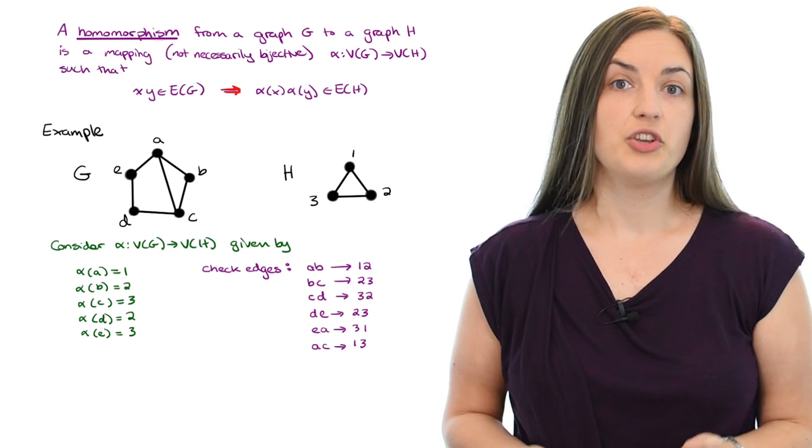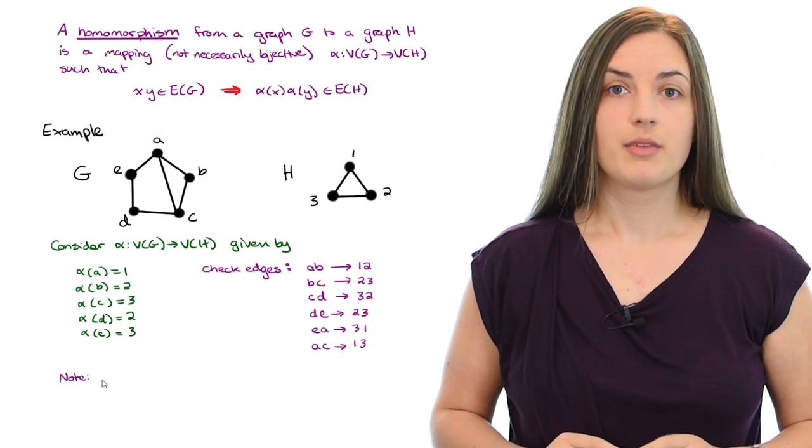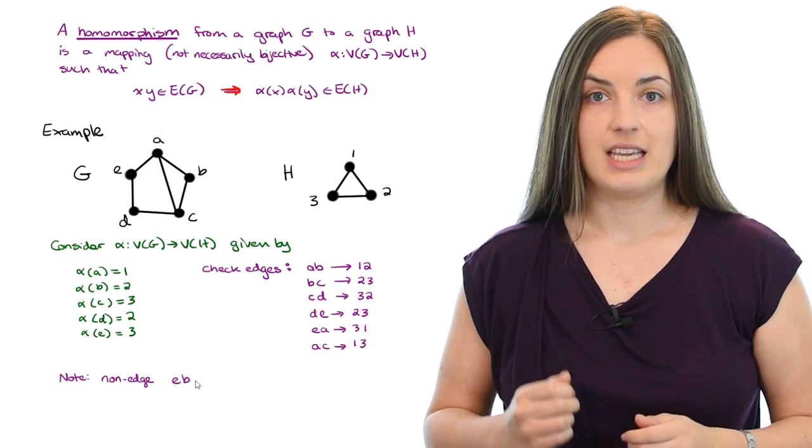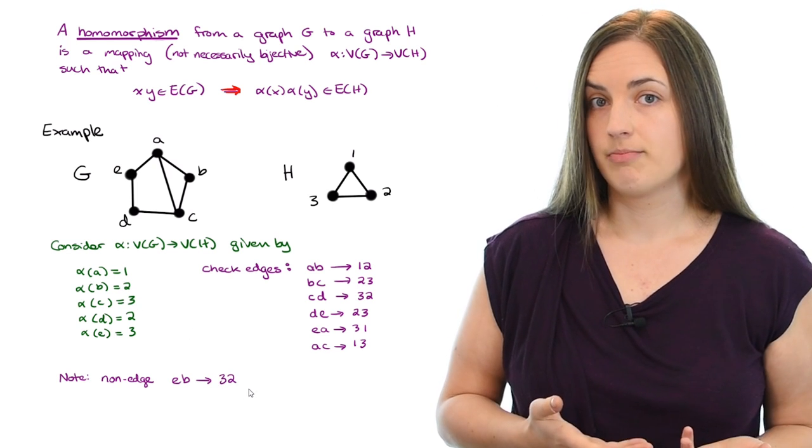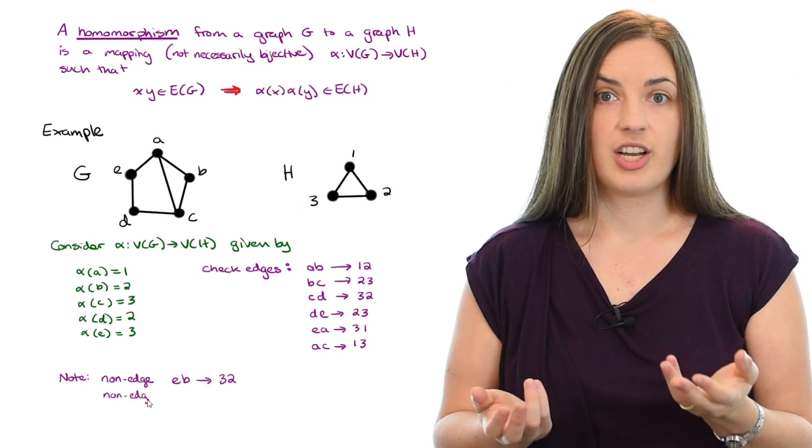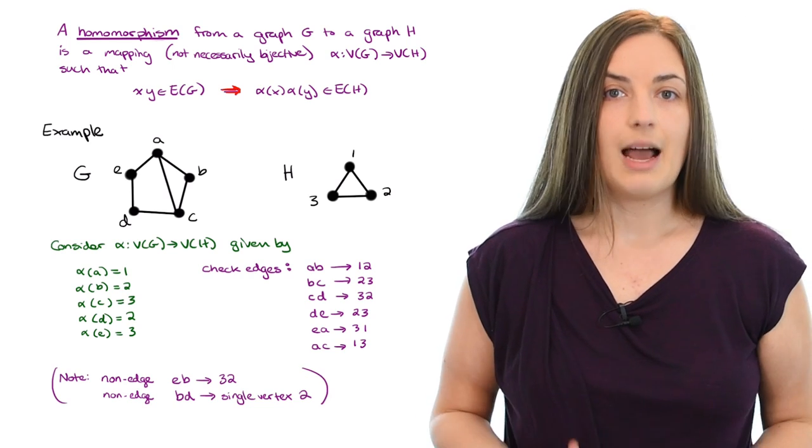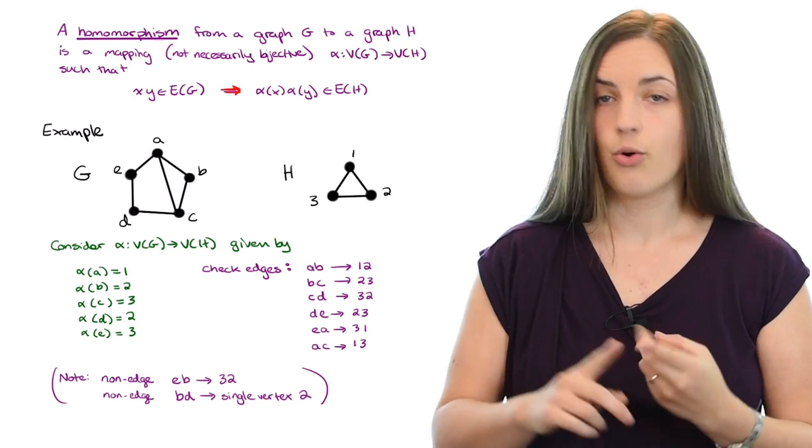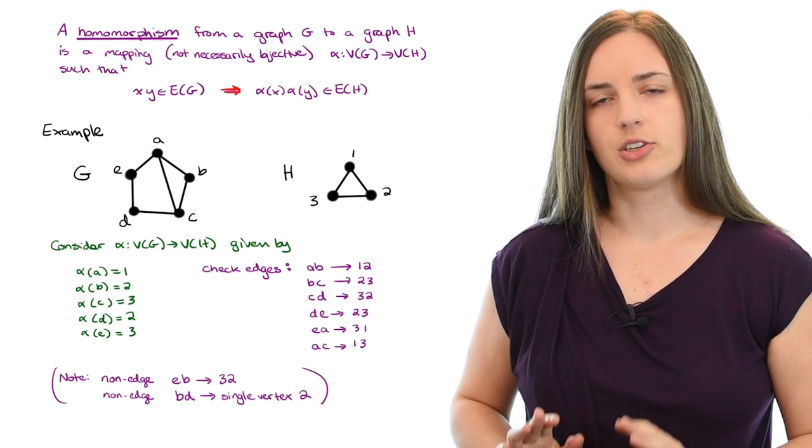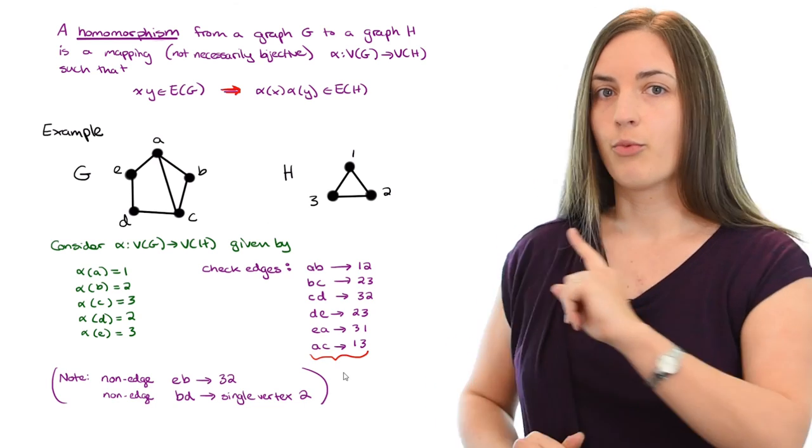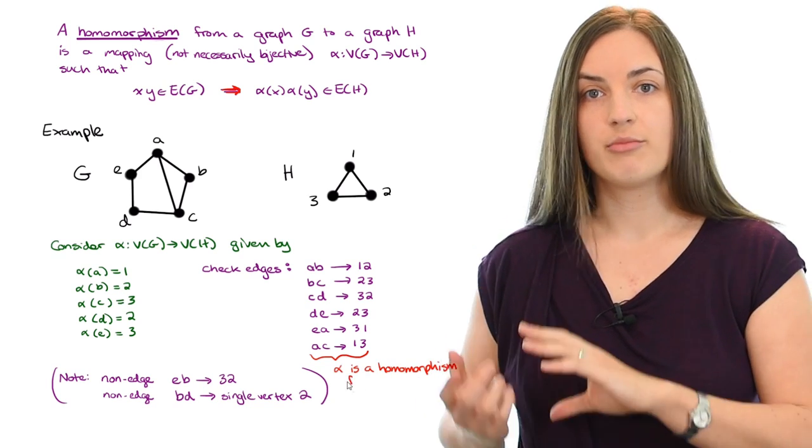Out of curiosity, you may want to see what happens to some of the non-edges. Again, it doesn't affect whether or not it's a homomorphism. But if you look at the non-edge EB, you'll see that it maps to 3, 2. So in that example, a non-edge got mapped to an edge. Whereas a different non-edge such as BD, that gets mapped to the single vertex 2. So different things can happen to non-edges. They can either be mapped to edges or to a single vertex or potentially even to a non-edge. But remember that we don't mind what happens to non-edges. The important part was our check on the edges. And that was enough to tell us that alpha is a homomorphism from G to H.